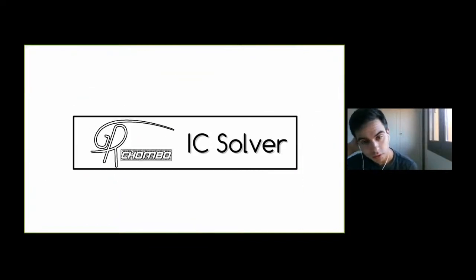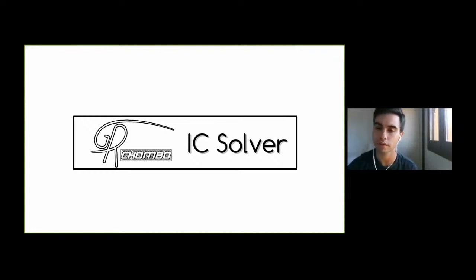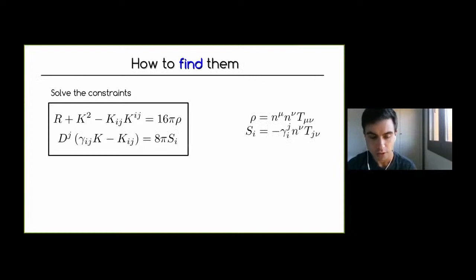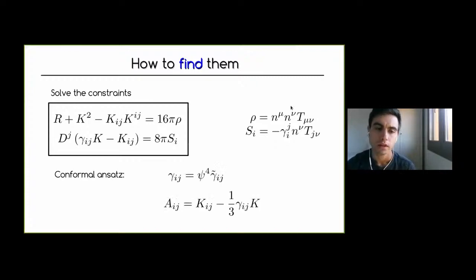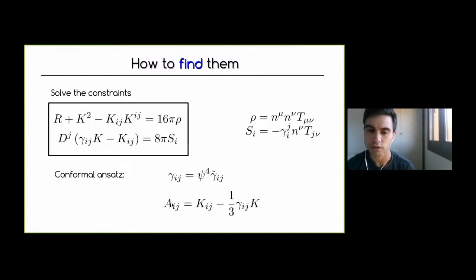To solve this, we are working on an initial condition solver with GRChombo, trying to make it as general as possible — you just include the matter field you want. We use multigrid methods to solve it, and the idea is to make it so you can run it, get an initial condition file, and then evolve it with any code you like. The standard approach is to solve the four constraints, where rho and S_i are different projections of the energy-momentum tensor. We choose a conformal ansatz decomposing the three-metric as a conformal factor times a conformal metric.